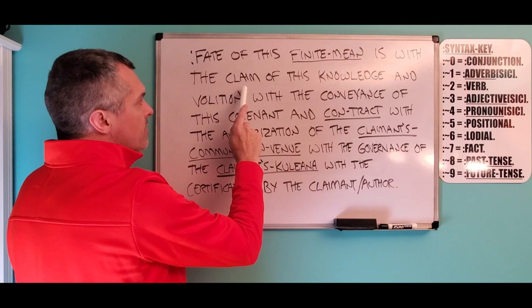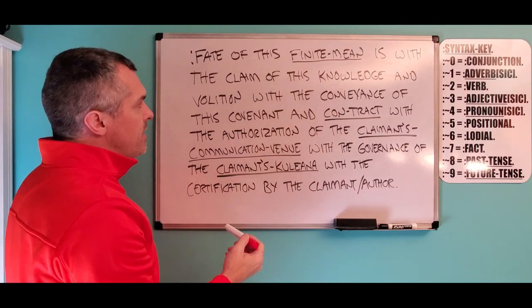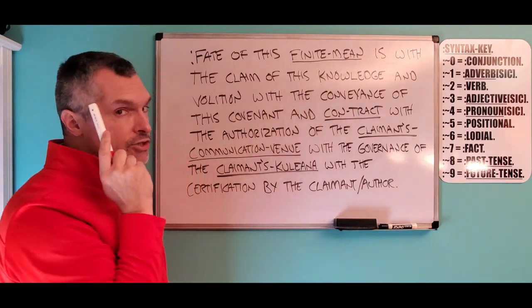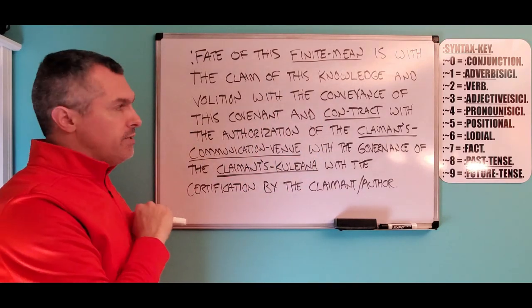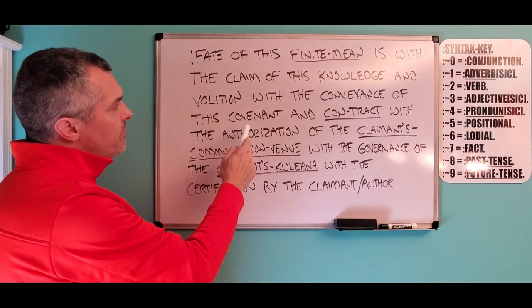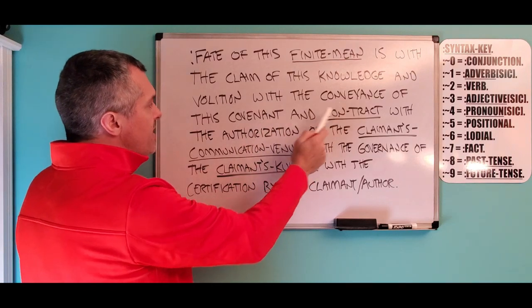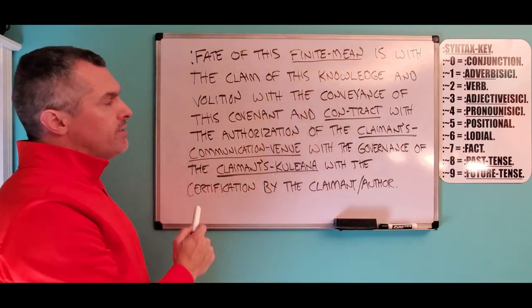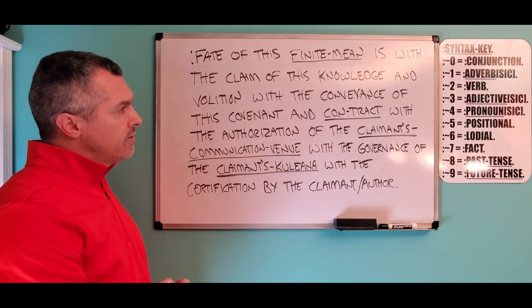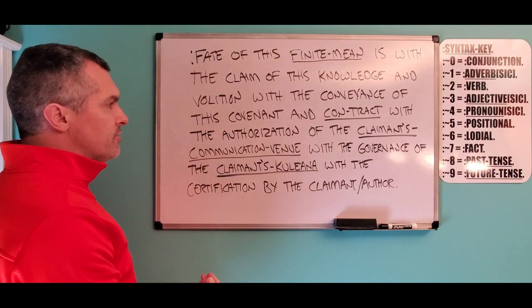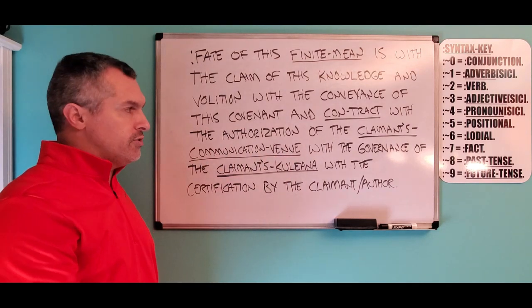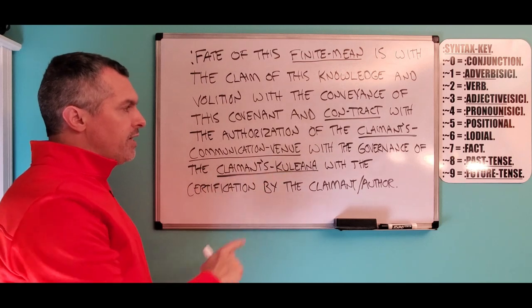With the claim, this is possessive of the finite mean. And what is the claim concerned with? This knowledge and volition. What is possessive of the volition and knowledge? With the conveyance. And what is the conveyance concerned with? This covenant and contract. And what's possessive of those things? With the authorization. And what is the authorization concerned with? The claimant's communication venue.